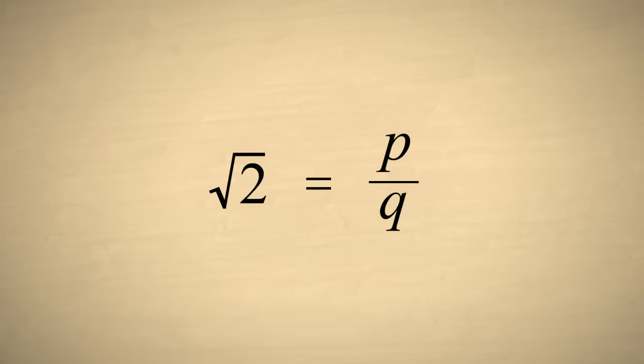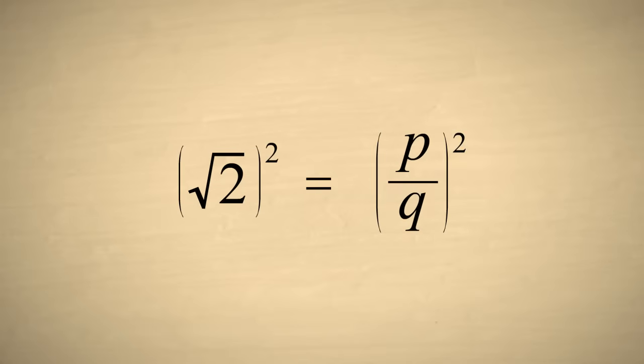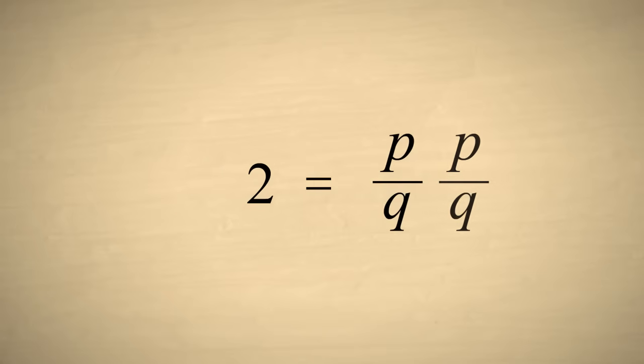Now, since the square root of two and the quantity p over q are equal, then we can square them both and they will still be equal. The square root of two squared is two, and the quantity p over q squared is p over q times p over q, or p times p over q times q.